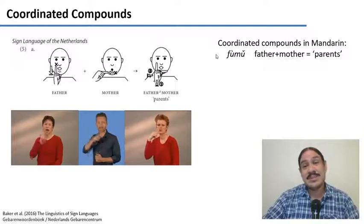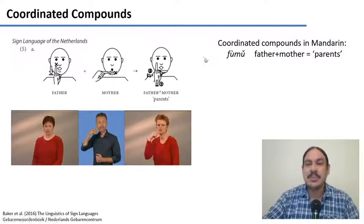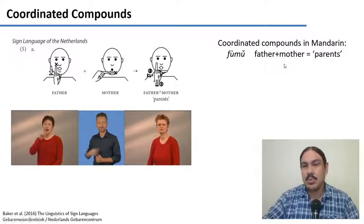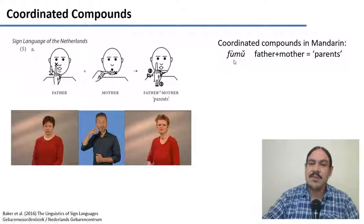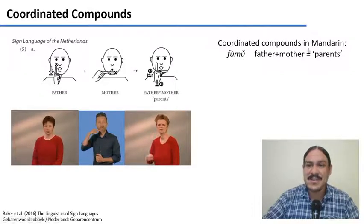We call these coordinated because both of them contribute equally to the meaning. Many spoken languages have these — Mandarin has the exact same compound in the word 父母. Father plus mother is literally 'parents'.